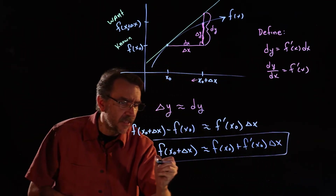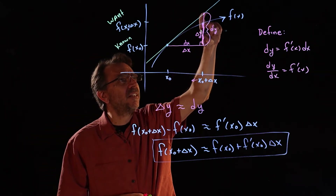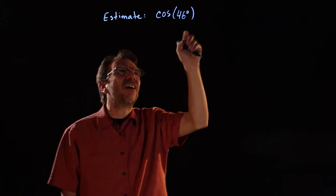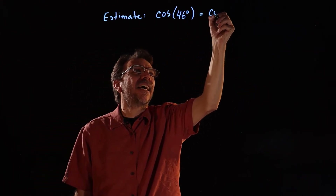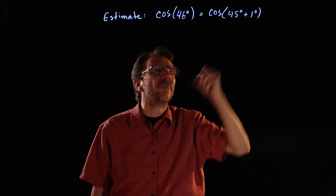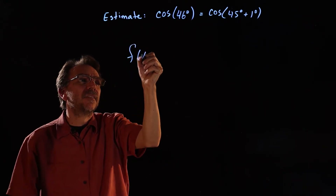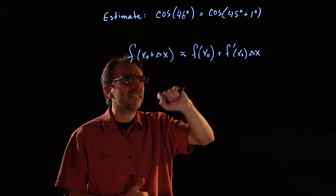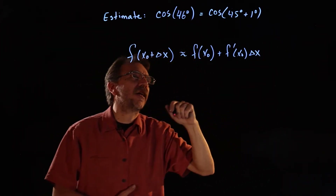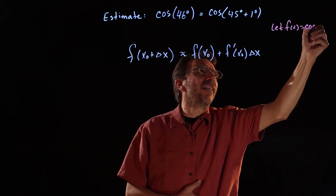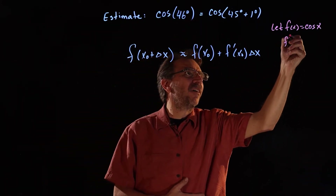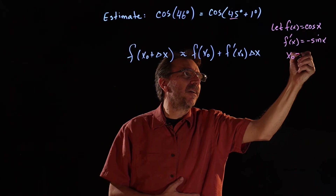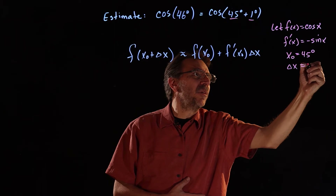Now we're asked to estimate cosine of 46 degrees. We know cosine of 45 degrees, so we think of this as cosine of 45 degrees plus 1 degree, and use local linear approximation. The function is f of x equals cosine x, and f prime of x equals negative sine x. The known value x naught is 45 degrees and delta x is 1 degree.